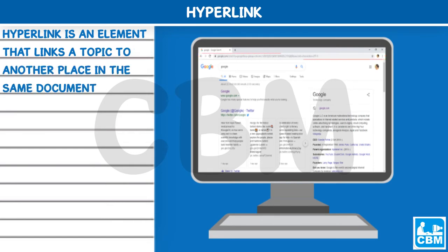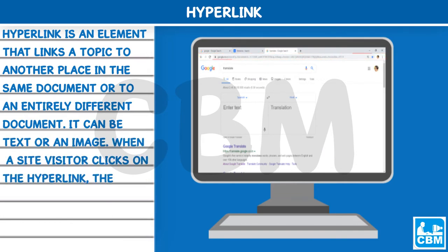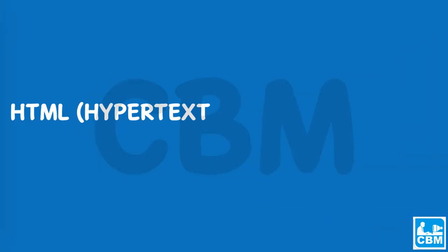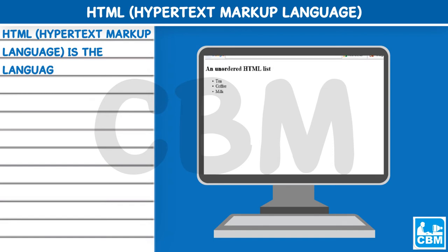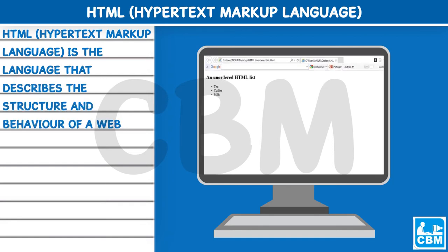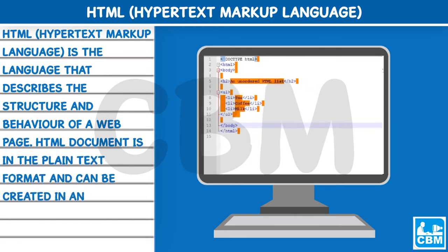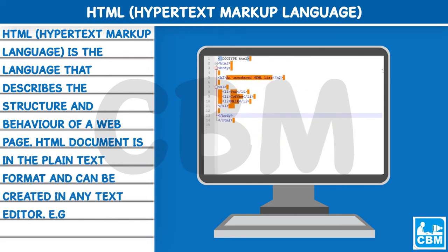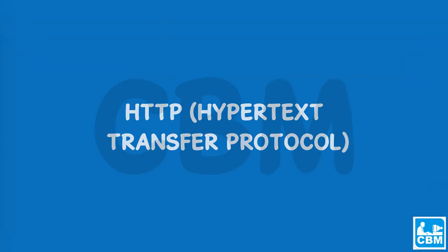The home page contains a summary of the web pages and their purposes. Hyperlink: A hyperlink is an element that links a topic to another place in the same document or to an entirely different document. It can be text or an image. When a site visitor clicks on the hyperlink, the topic destination is displayed in a browser. HTML (Hypertext Markup Language): HTML is the language that describes the structure and behavior of a web page.